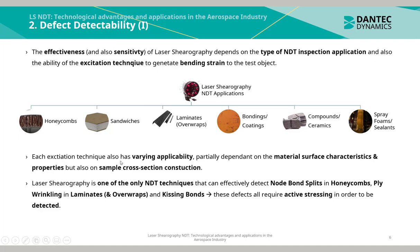Each excitation technique has varying applicability, partially dependent on the material surface characteristics and properties, but also on the sample cross-section construction. Laser Shearography is one of the only NDT techniques that can effectively detect node bond splits in honeycombs, ply wrinkling in laminates and overwraps, and kissing bonds — defects that all require active stressing in order to be detected.